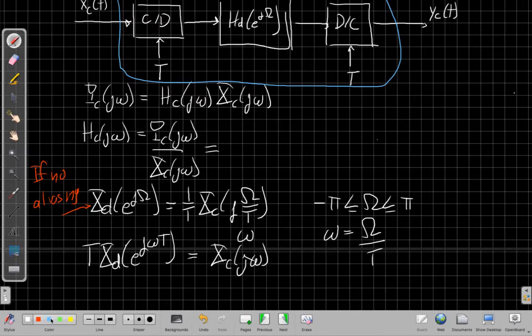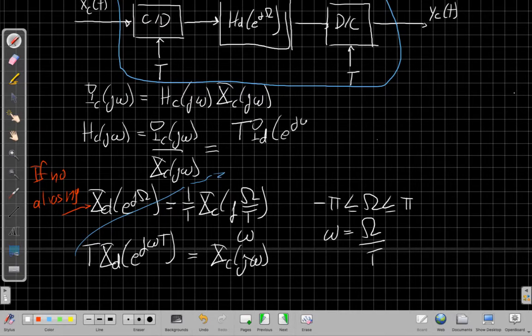So I'm going to bring this back up here. And the reconstruction filter has the same thing. We saw the reconstruction filter gave us Yc equals T times Yd of e^(jωT).